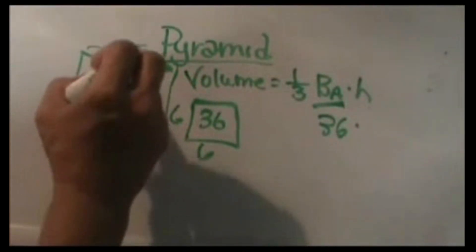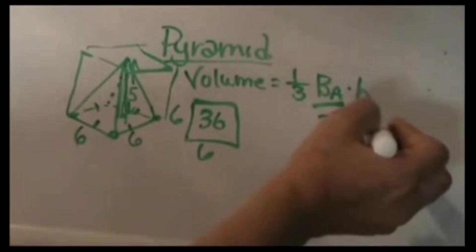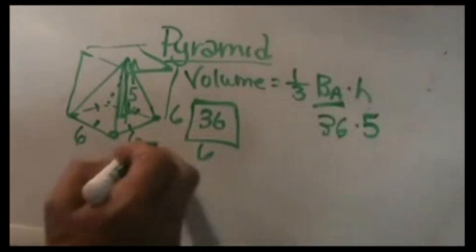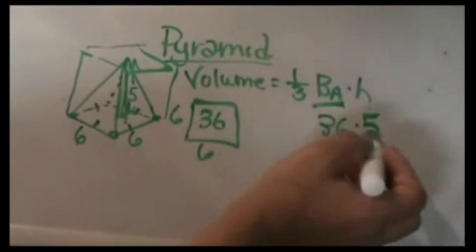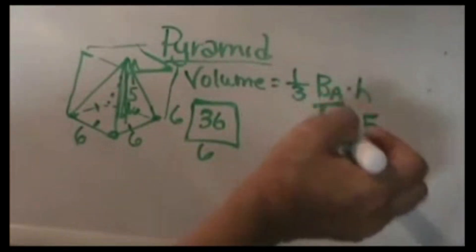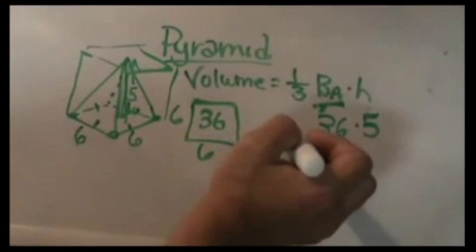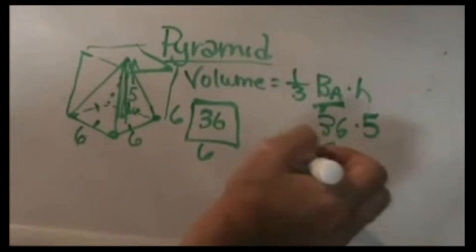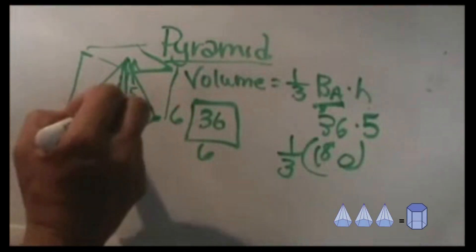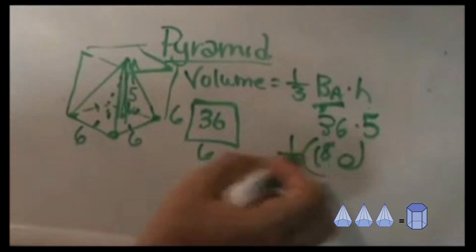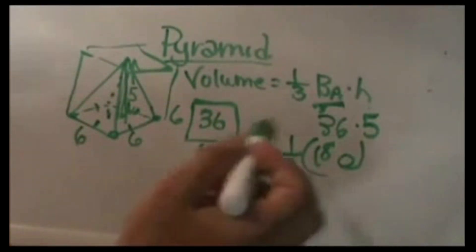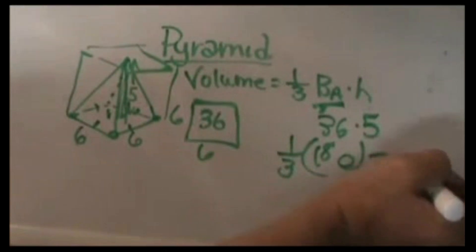The height of this pyramid is five so I'm going to plug in five. So five times 36 is 180 square units. Now I'm going to take that and I'm going to multiply it by one third because three pyramids fit inside that prism. Or it's a third of it so you can divide it by three or multiply by one third whatever you want to do. But it ends up being 60.